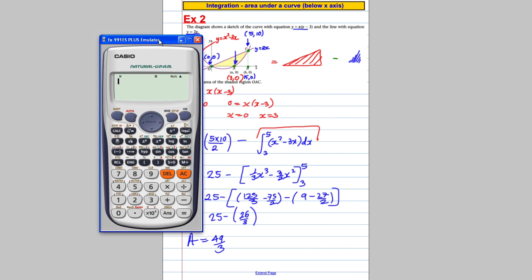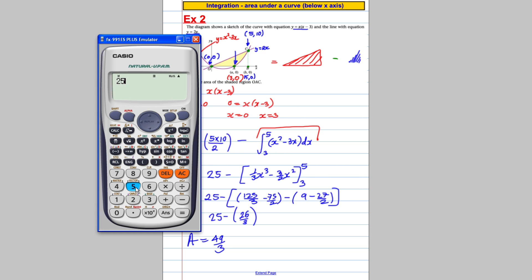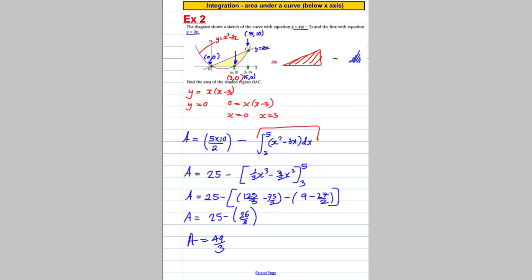Let me verify: it's 25 take away the integral of x squared minus 3x between 3 and 5. I get 49 over 3, so I know I've done it right and I've got the right answer. That's it for this video — hope you found that useful, thanks for watching.